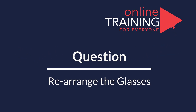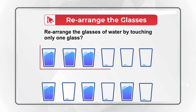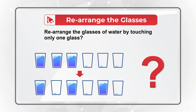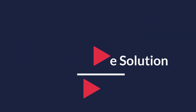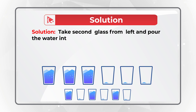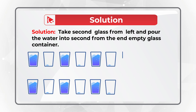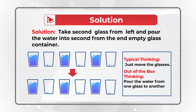I love this amazing question because it tests out-of-the-box thinking. You need to rearrange the glasses with water by only touching one glass, going from configuration 1 on top to the bottom configuration. The solution is to take the second glass from the left and pour the water into the second-from-the-end empty glass container. Typical thinking is to move the glasses, but out-of-the-box thinking is to pour the water from one glass to another.